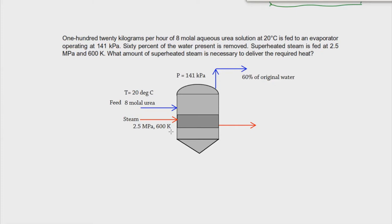When we say saturated, the maximum amount of water at the vapor phase is already dissolved at that certain condition — that's why it is called saturated. If it's superheated, then it is heated above its normal heating temperature. There are also cases of supercritical steam, but most of the time we only consider saturated and superheated steam.